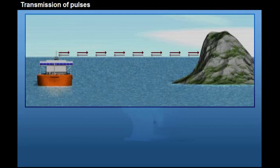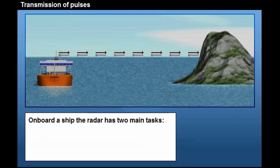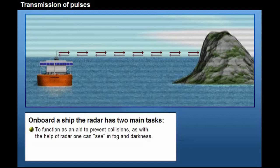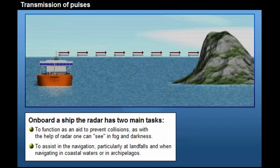The transmitted pulse must be short, in order to distinguish between echoes located close to each other. On board a ship, the radar has two main tasks. One is to function as an aid to prevent collisions, as with the help of radar, one can see in fog and darkness. The other is to assist navigation, particularly at landfalls and when navigating in coastal waters or in archipelagos.